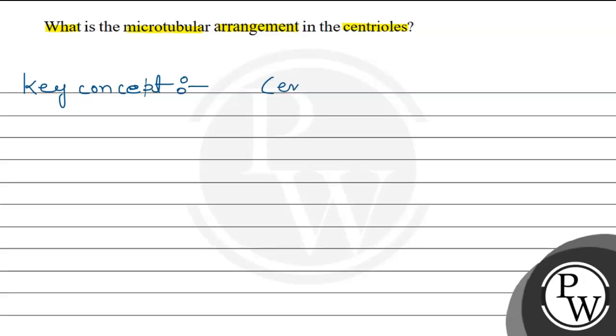So, the centrioles are cell organelles and they are found in most of the eukaryotes.